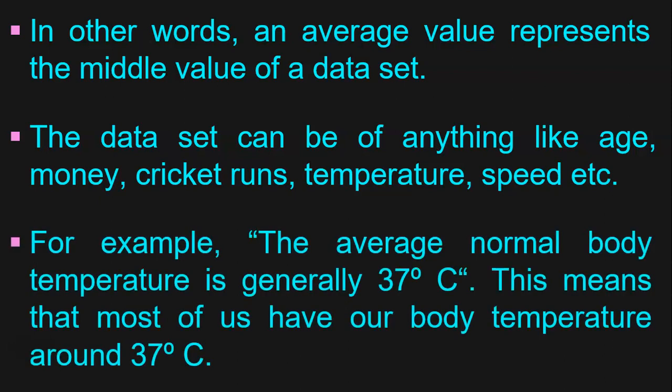Let us take an example of this statement. The average normal body temperature is generally 37 degrees Celsius. This means that most of us will have our body temperature around 37 degrees Celsius. Some may have it at 36, some at 38, and some at 37. But on an average, the body temperature is generally 37 degrees Celsius, which is almost the mid value.